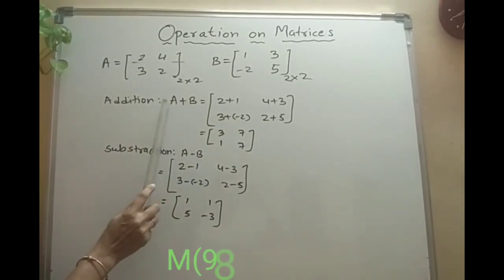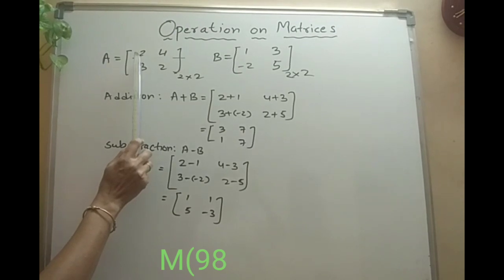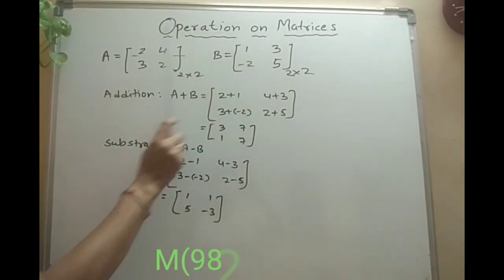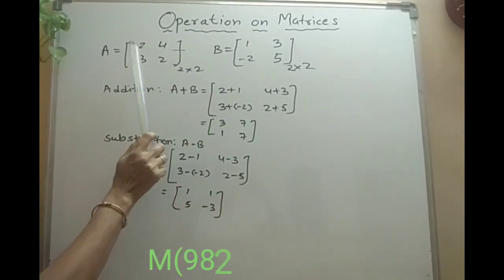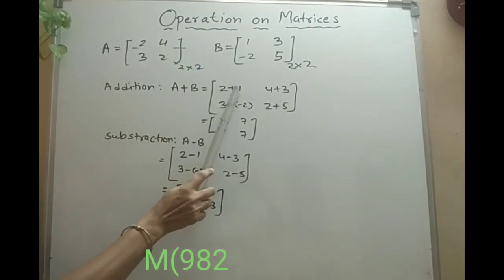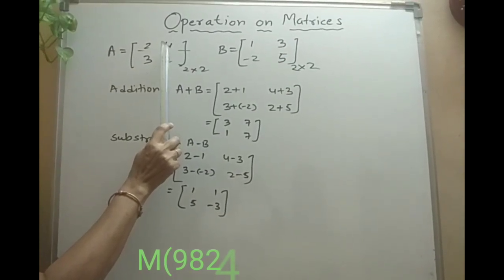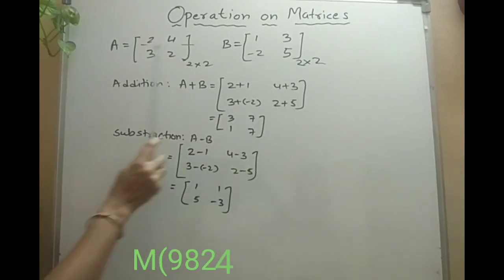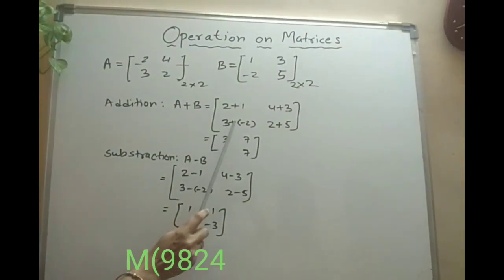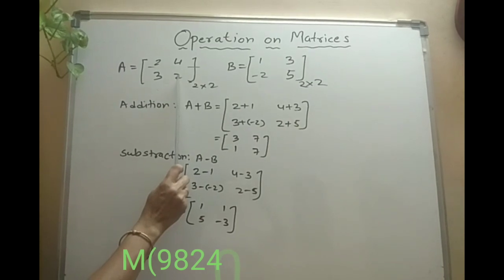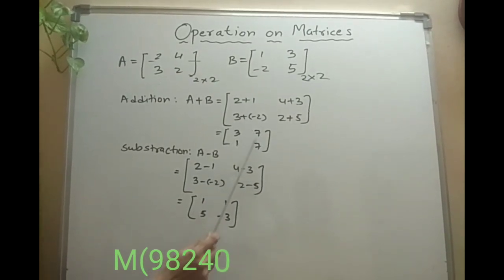So let us add two matrices. When we add two matrices, respective elements are added to respective elements. This is A11 in the first matrix and A11 in the second. So starting with the first element: 2 plus 1. The second element in the first row: 4 is added to 3, so 4 plus 3. Coming down: 3 is added to minus 2, so 3 plus minus 2. The corner element: 2 plus 5. So we are getting the answer 3, 7, 1, 7.